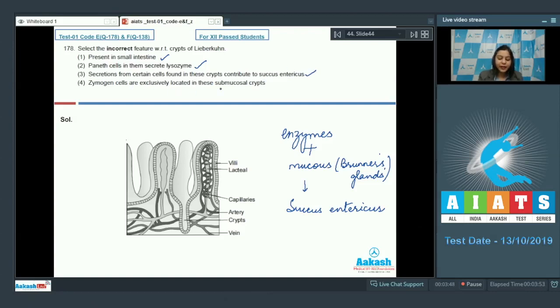Zymogen cells are exclusively located in these submucosal crypts. Here we have two points. First is zymogen. Zymogens are inactive enzymes. The enzymes of succus entericus or intestinal juice are not inactive. These enzymes are active enzymes. Therefore, zymogen cells is wrong. These are exclusively located in these submucosal crypts. These crypts are present or are a part of the intestinal mucosa and not the submucosa. These crypts are present in the mucosa. Therefore, this is also incorrect. So this statement is completely incorrect. So the answer to this question becomes option number 4.